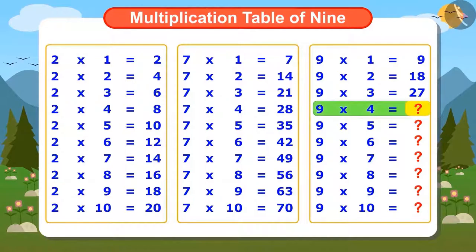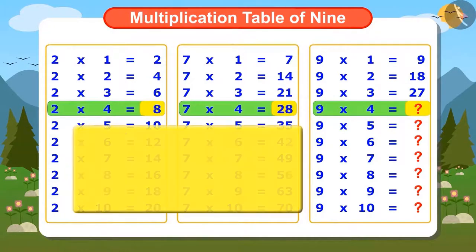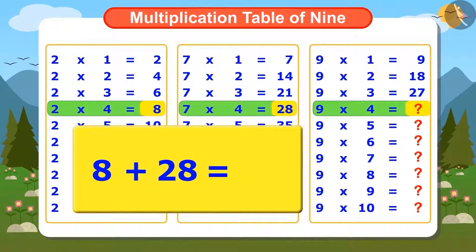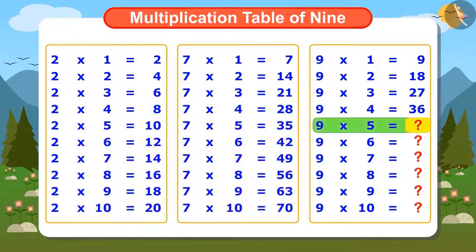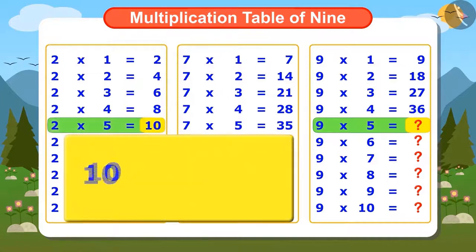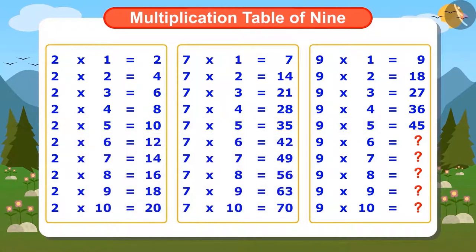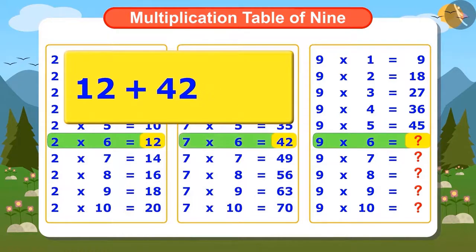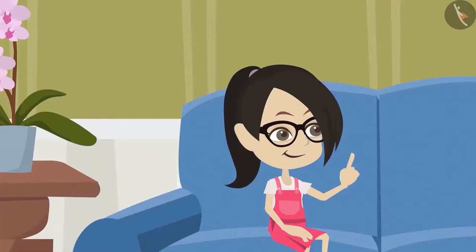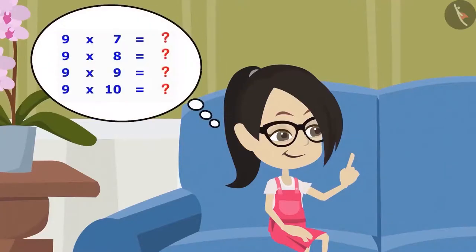You can stop this video and try to find the next 3 numbers. Now let us see how Vandana finds out the next 3 numbers. Now to find out 4 times 9, I add the 4th numbers of both the tables. 8 and 28, the answer is 36. Similarly, to know the next number, add 10 and 35, the answer is 45. And to find the next number, we add 12 more to 42. The answer came as 54.